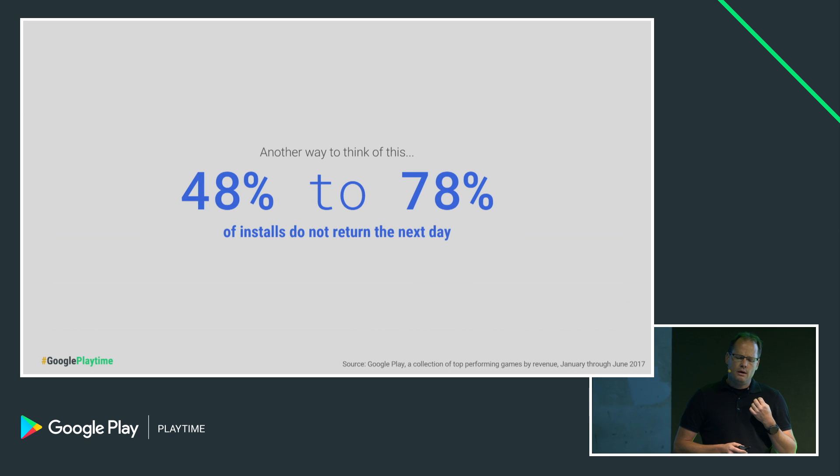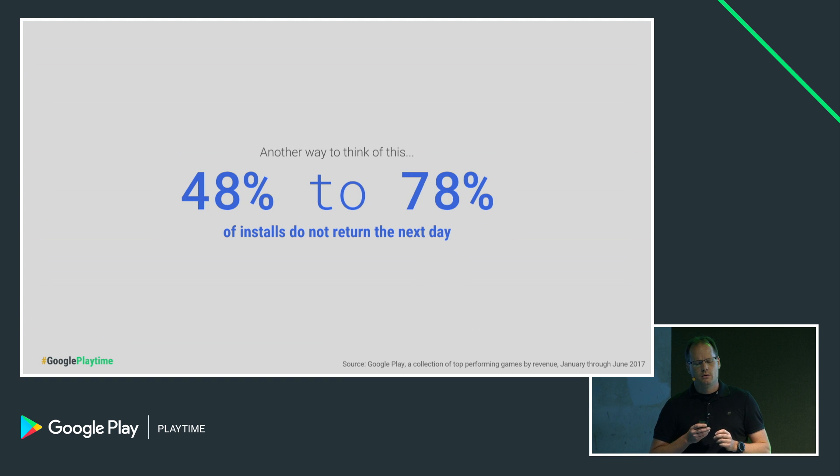Another way to think of this is that day two retention tends to range between 22% and 52%. But if we flip it around, it actually means that 48% to 78% of users who install and play our games for the very first time today won't be back tomorrow. It's a staggering number when you think about how much time and effort we devote to creating our games and how much money we spend on acquisition. What I'm hoping to do here is show you some signals that occur in the very first day that can help you understand whether your retention is good, and if it's not, some things to check for to potentially improve it.